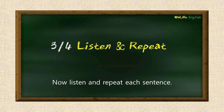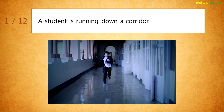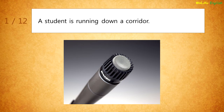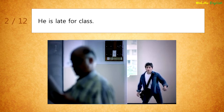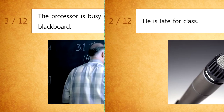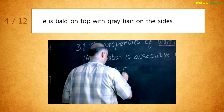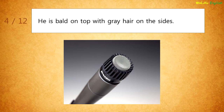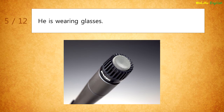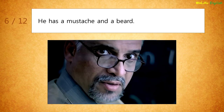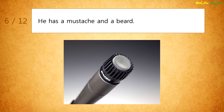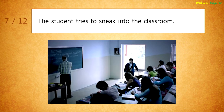Now listen and repeat each sentence. A student is running down a corridor. He is late for class. The professor is busy writing something on the blackboard. He is bald on top with gray hair on the sides. He is wearing glasses. He has a mustache and a beard. The student tries to sneak into the classroom.